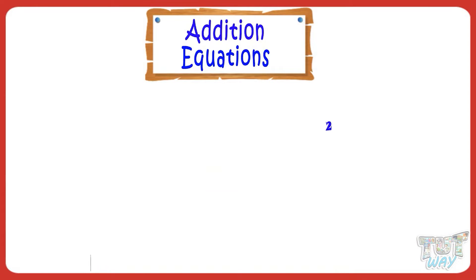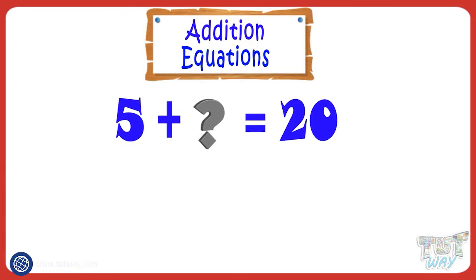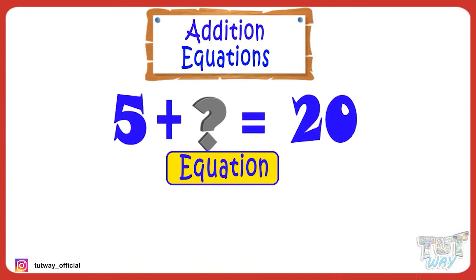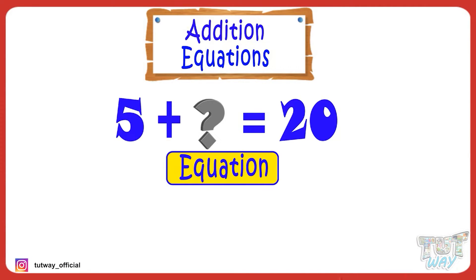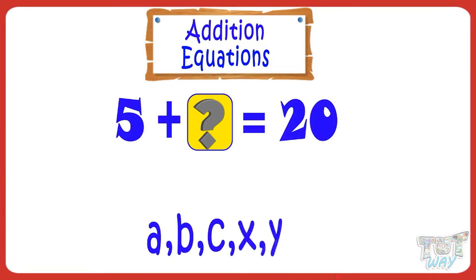One number must be added to 5 to get 20. We can write this mathematical question in the form of an equation, like this. We can replace the question mark with any alphabet, like A, B, C, X, or Y, and our equation becomes 5 plus X equals 20.